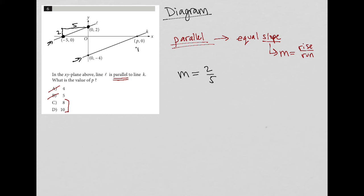Which means that the slope for line K must be the same. M must equal 2/5 for this one. So let's do 2/5 there. So if I go up 2, I'd be at negative 2. And when I run 5, I'd be at 5 here.